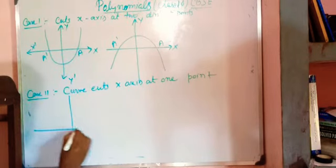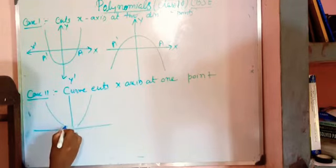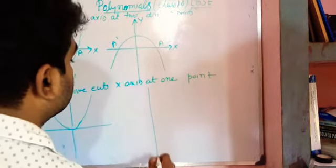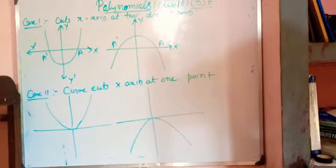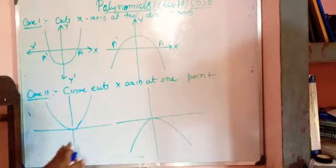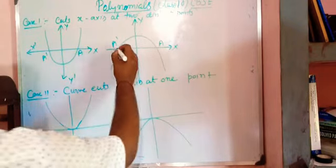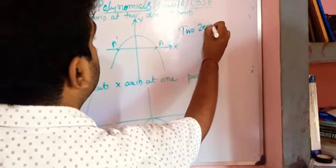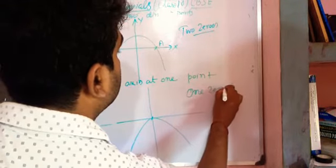In that case, the curve looks like this - this would be the meeting point. Hope you understand. I am not writing the x-axis, y-axis labels. In this case, there should be how many zeros? Two zeros. In this case, how many zeros? One zero.